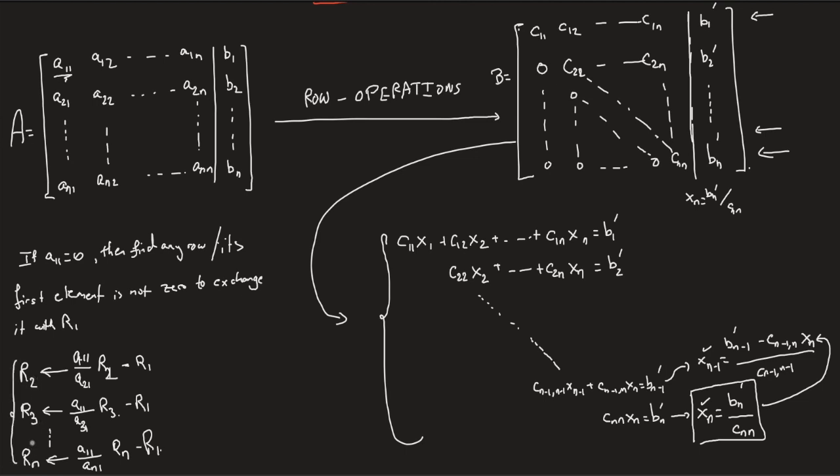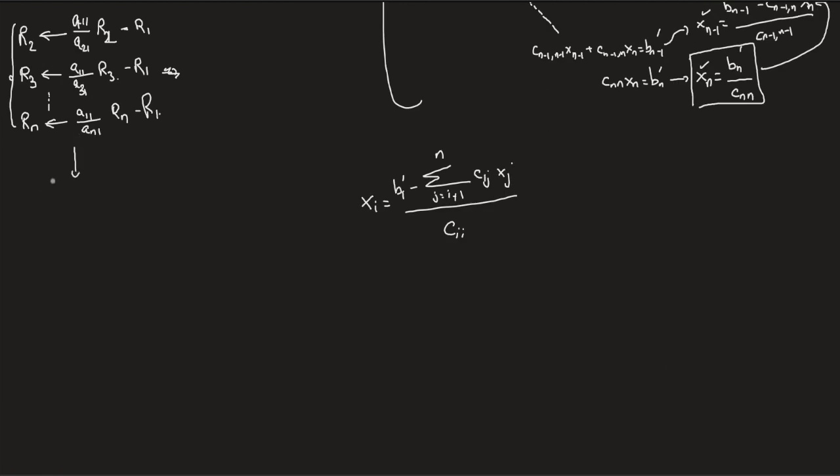After those n-1 elementary row operations, we're going to get an augmented matrix that looks like this. So the first row is untouched. The second row starts with zero, actually any row starts with zero. And all the other elements are modified. So here I've got an A_2,2 prime down to A_2,N prime. Here I've got an A_3,2 prime down to A_3,N prime. What we have here is also modified. So B_2 prime, B_3 prime, B_3 prime and B_N prime, right?